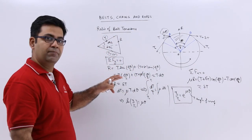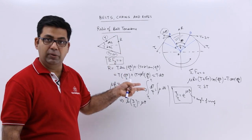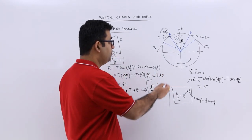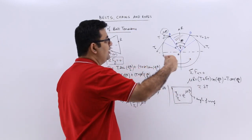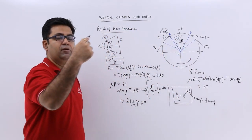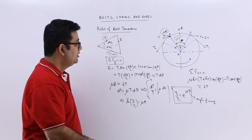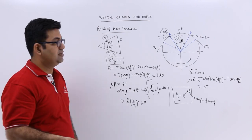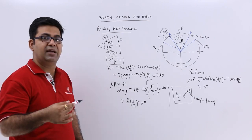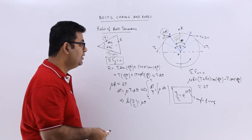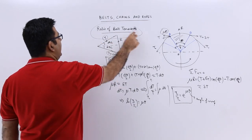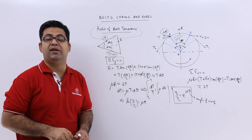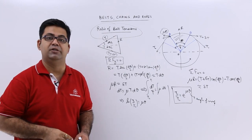In the next video we will add one more tension — the centrifugal tension. Because this pulley is rotating, there will be a centrifugal force produced, which results in a centrifugal tension acting on the belt. In the next video we will look at the ratio of belt tensions when we consider the centrifugal tension.